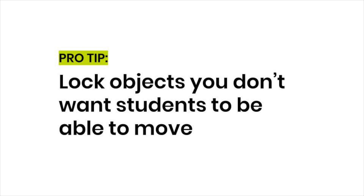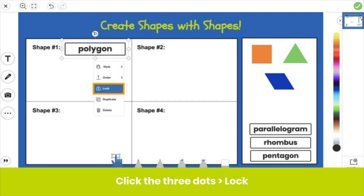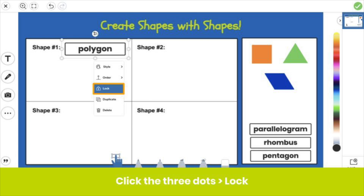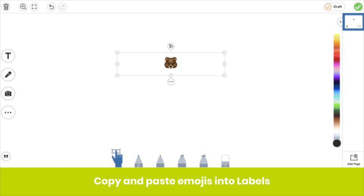We have two tips to help you. Pro tip number one: lock any object you don't want students to be able to move. For example, if you want all students to build a polygon as their first shape, you can lock that label in place by clicking the three dots then lock. Pro tip number two: you can copy and paste emojis into labels. Simply add the label and paste the emoji. Emojis give you so many more options for making your templates come to life.